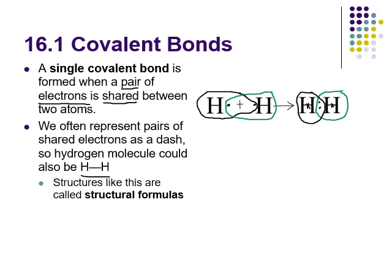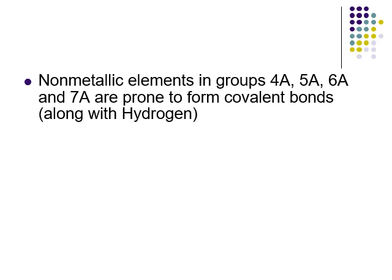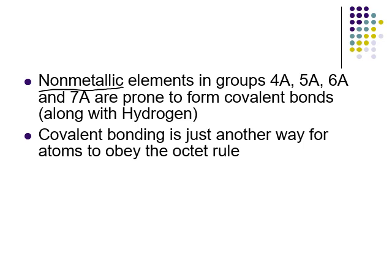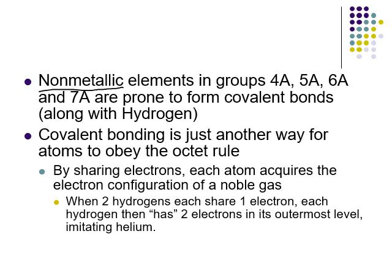A structural formula tells us not only what's present but also how it's arranged. Non-metals form covalent bonds - non-metals with non-metals make molecular compounds, and molecular compounds are made of covalent bonds. This is just another way for atoms to obey the octet rule. By sharing electrons instead of transferring them, they will have the electron configuration of the noble gas, because each atom views those shared electrons as belonging to itself.